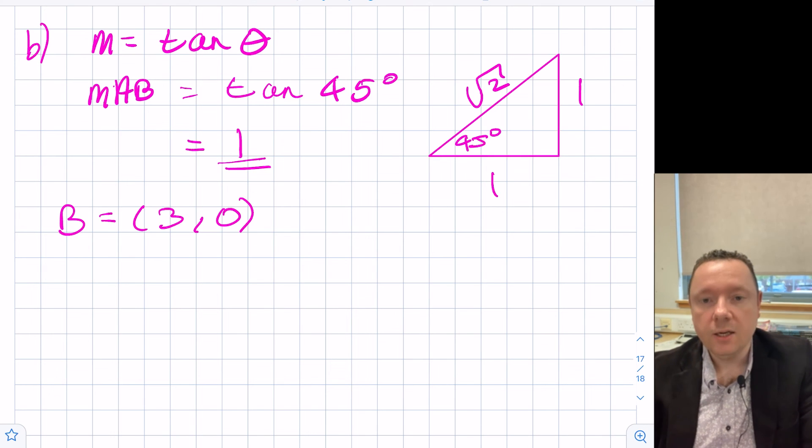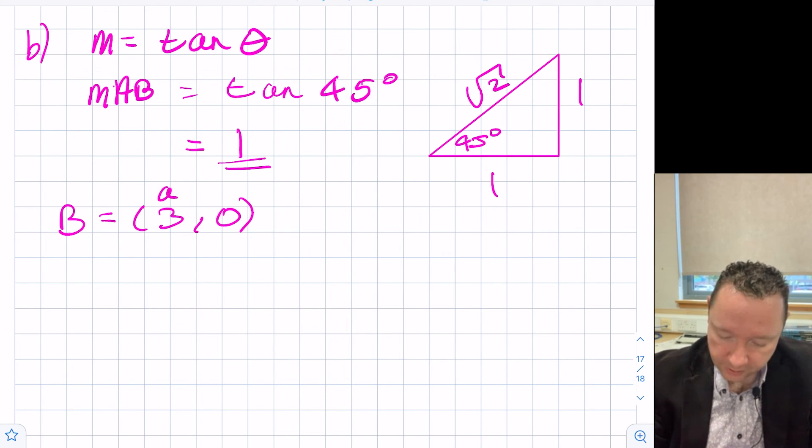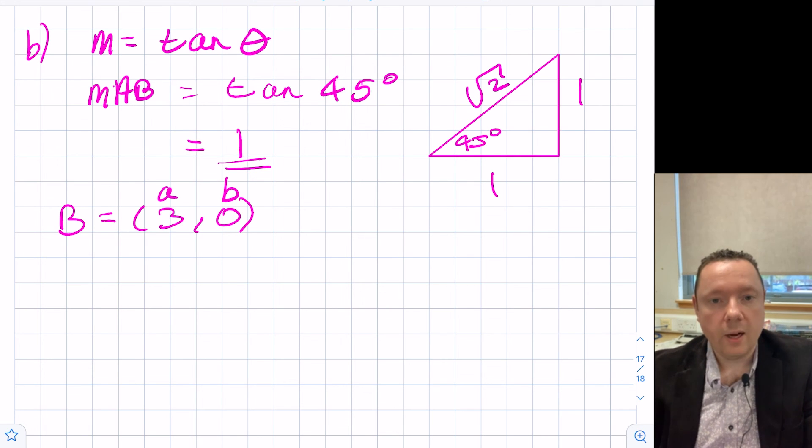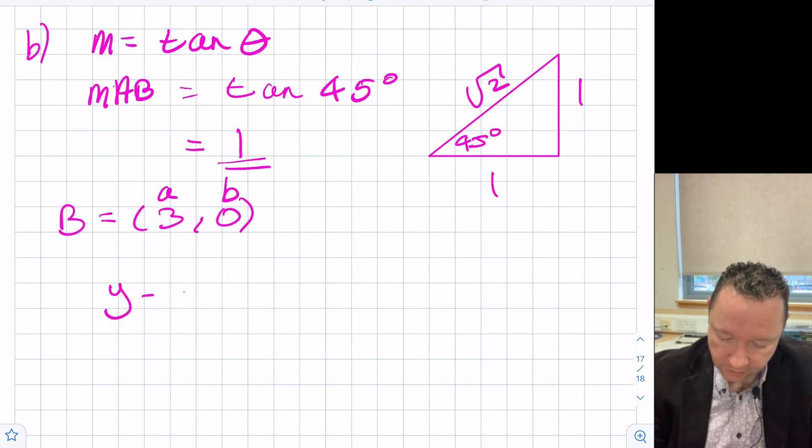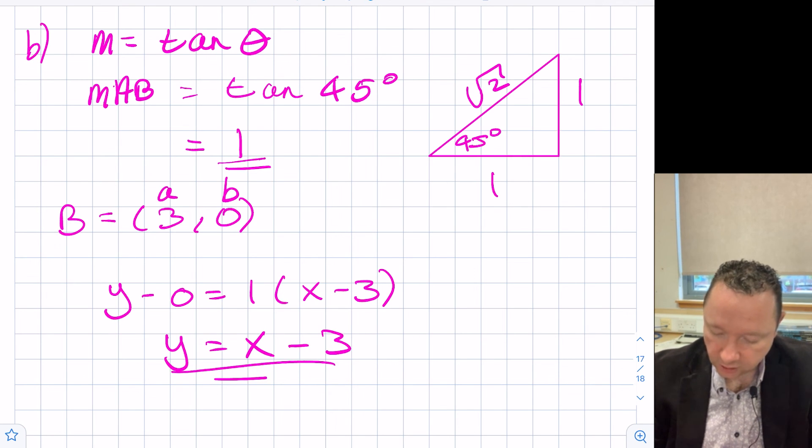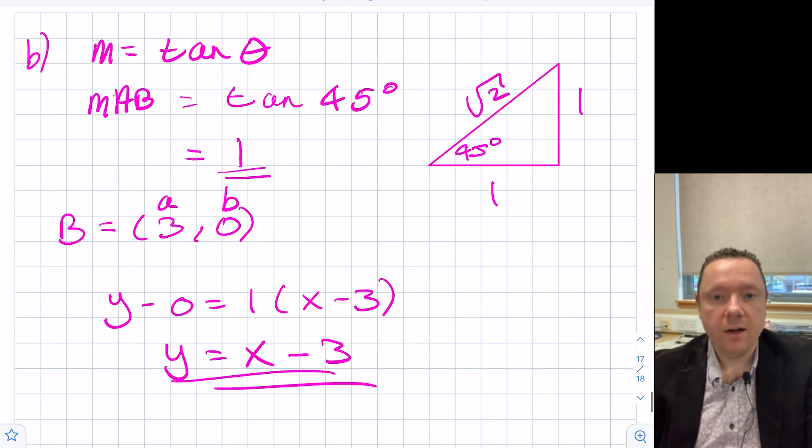We've now got two bits of information. So y minus 0 equals 1x minus 3. So y equals x minus 3 is the equation of our straight line. This has been Craig Maths today. We've been looking at perpendicular bisectors for the higher maths course in Scotland. Take care, stay safe, and goodbye.